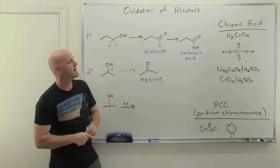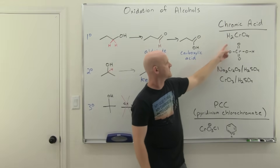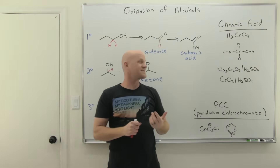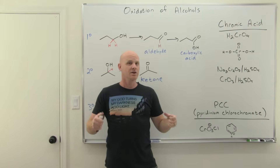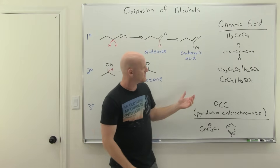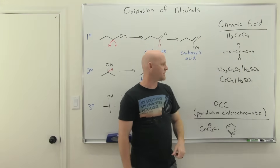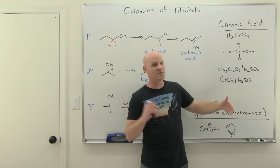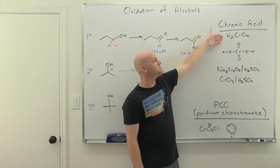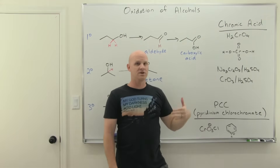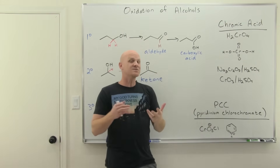Now let's talk about our two major oxidizing agents. Chromic acid is H₂CrO₄. The problem with chromic acid is that we usually make it in situ — we don't keep a bottle of it on the shelf. The most common examples are sodium or potassium dichromate with aqueous sulfuric acid, or chromium trioxide with a strong aqueous acid, most notably aqueous sulfuric acid. So it can be represented in one of these three principal ways: H₂CrO₄, or one of those common mixtures.